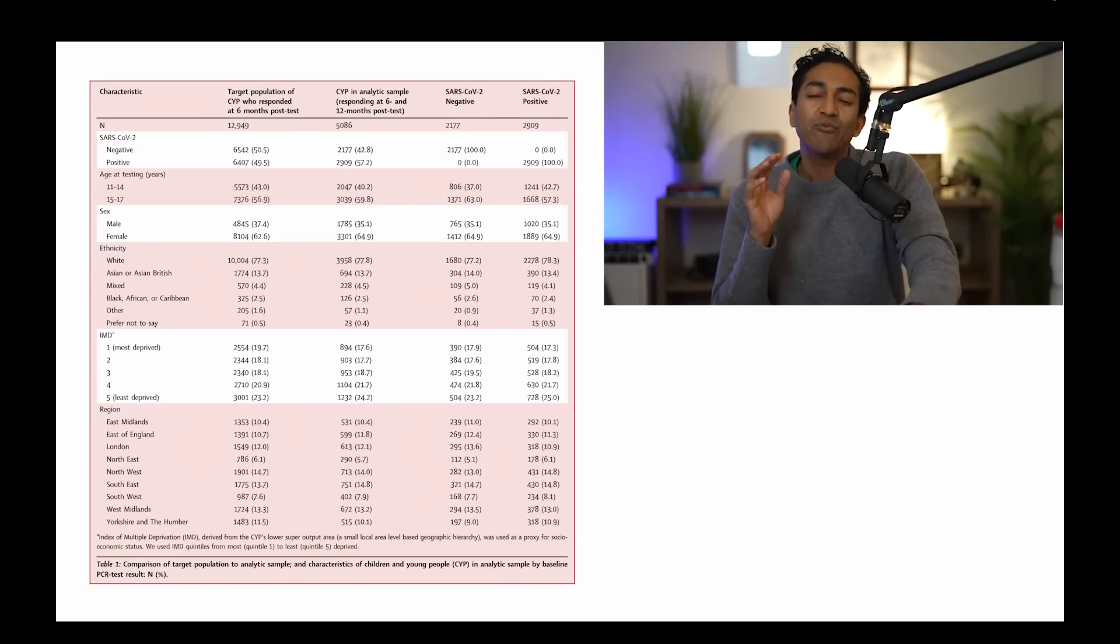Let's get into it. This is the Table 1. And what Table 1 is trying to show you is, it's looking at all the children and young people who responded six months and 12 months post-test and their characteristics by being COVID-19 negative and positive.